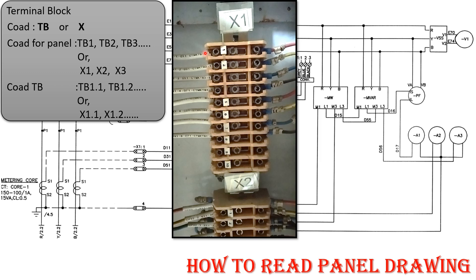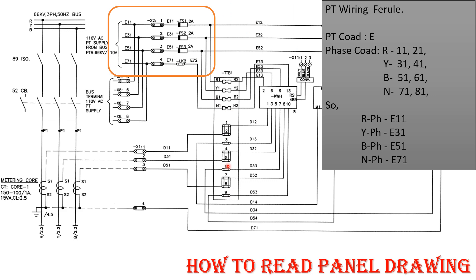Now let's see the PT wiring ferrule codes. The nomenclature for PT wiring starts with E — this is almost universal. If a ferrule starts with E, it belongs to PT wiring. For R phase the codes are 11; Y phase 31; B phase 51; neutral 71. For a second PT, the codes are 21, 41, 61, and 81. So for R phase, the ferrule code is E11; Y phase E31; B phase E51; neutral E71.